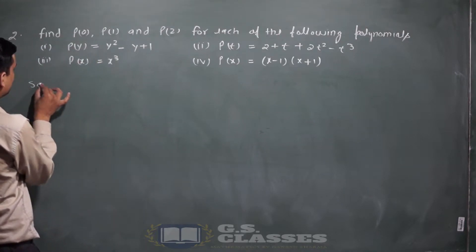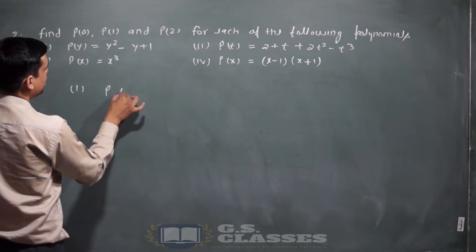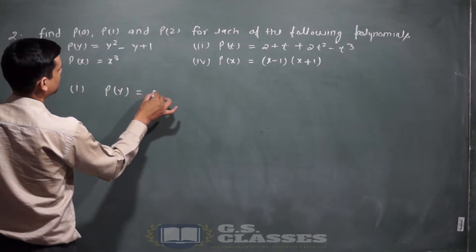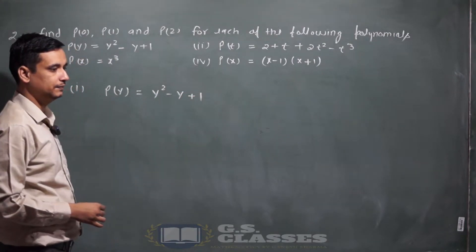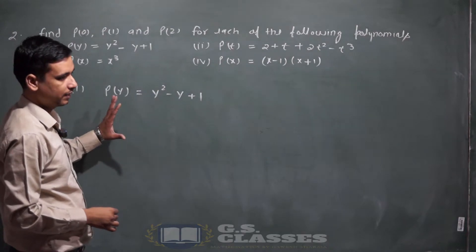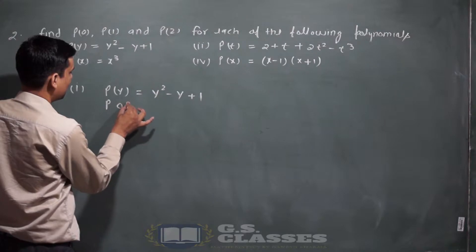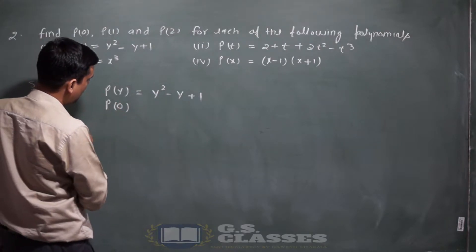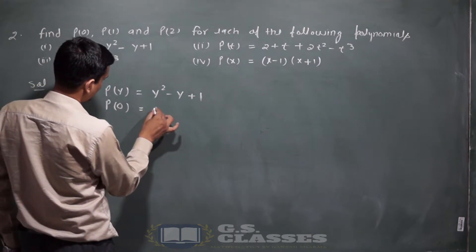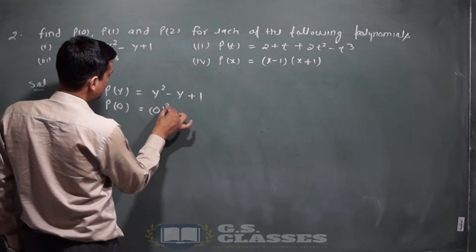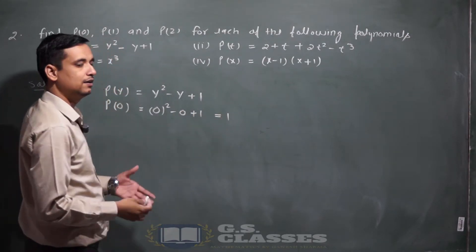करके दिखाता हूँ। First part: p(y) = y square minus y plus 1 दिया हुआ है। p(0) निकालना है — मतलब y की value 0 put करनी है। y की जगह 0: 0 minus 0 plus 1। Solve करेंगे तो answer है 1।